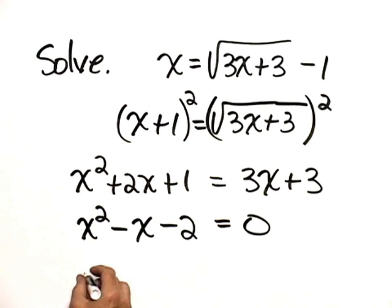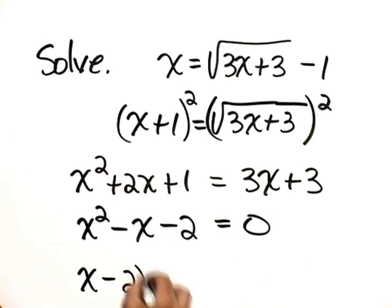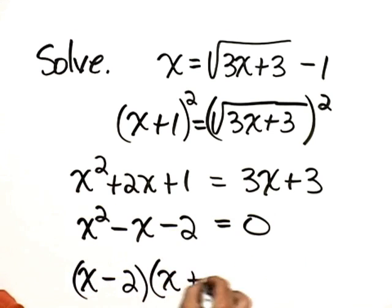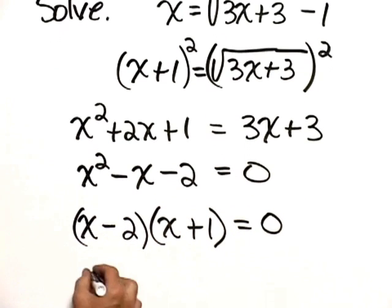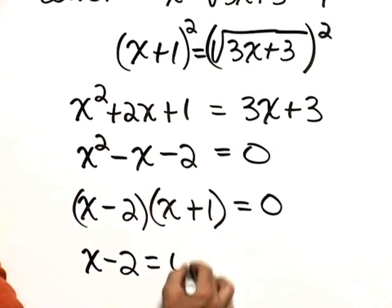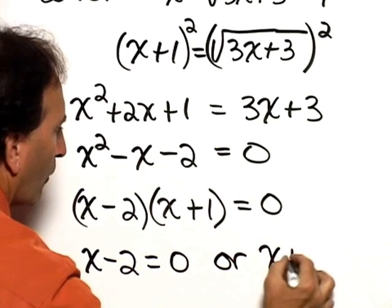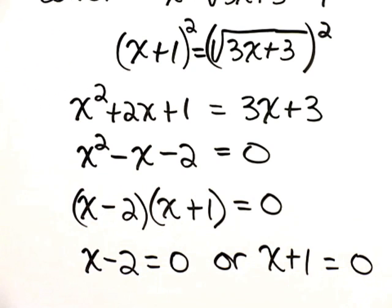Factoring the left-hand side, x minus 2 times x plus 1 equals 0. Using the zero factor property, we would say x minus 2 equals 0, or x plus 1 equals 0.